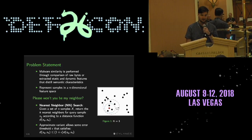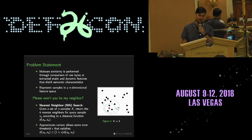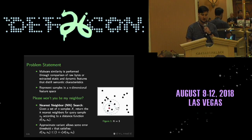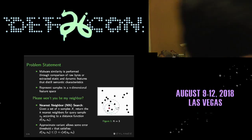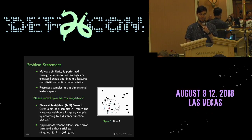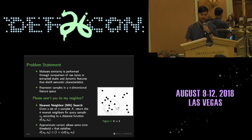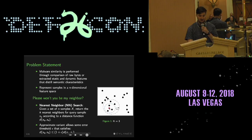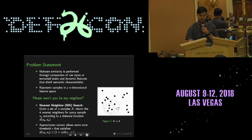Nearest neighbor search, simply put, is: given a set of samples X — our corpus — take a query sample XQ, query the index, and get back the K nearest neighbors according to some distance function. Many different distance functions could be used here: Euclidean, cosine, or even string metrics like edit distance or Levenshtein distance. Nearest neighbor search is hard at scale in high-dimensional space, so we look at approximate variants that allow some error threshold epsilon to bound our true distance.